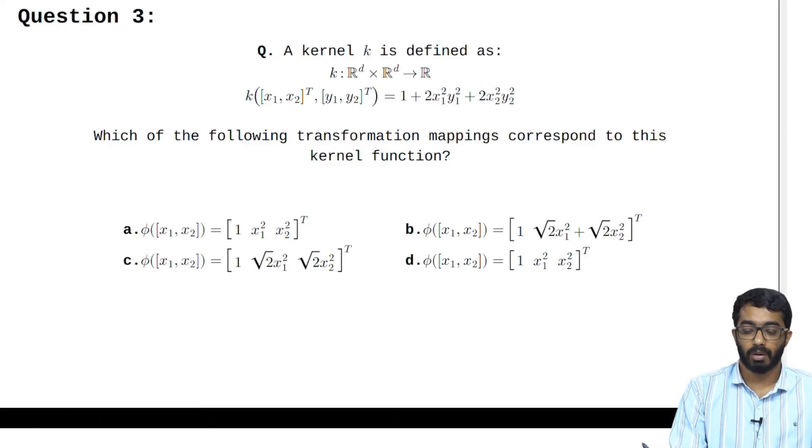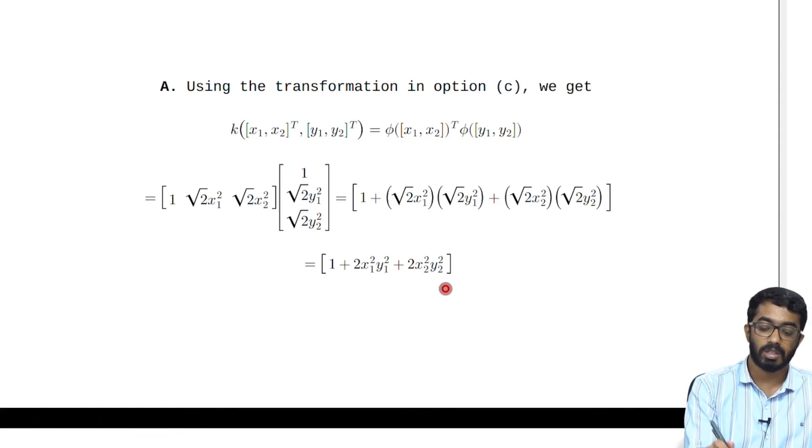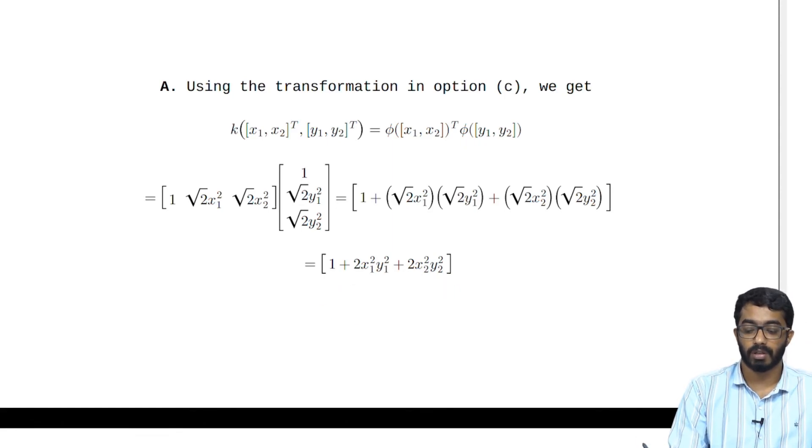So we plug in all the options and when we plug in option c into this formula, that is phi(x) transpose phi(y), we get our output to be this which is the output of the original kernel function. Therefore we can say that option c is the right answer. Thank you all.